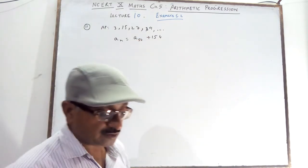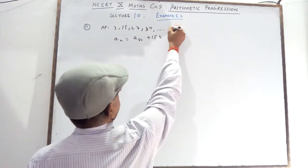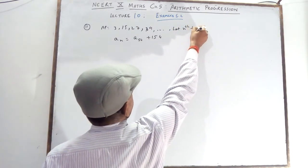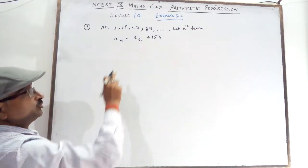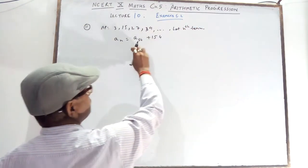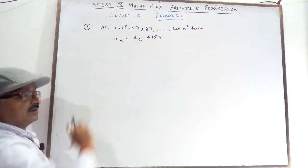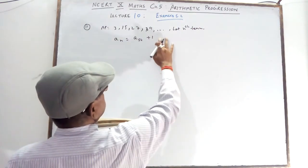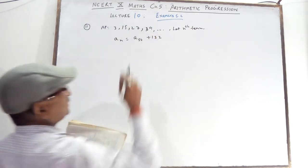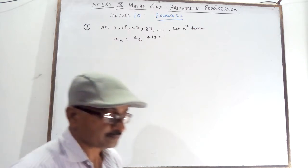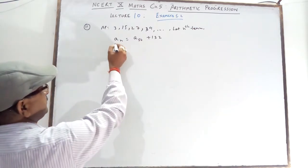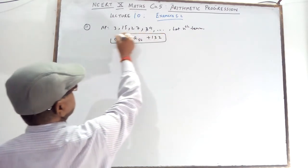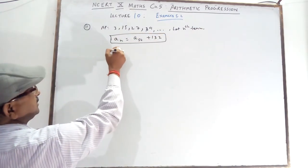So we write: let the nth term be 132 more than its 54th term. First find out what is A. What is A? It is 3.